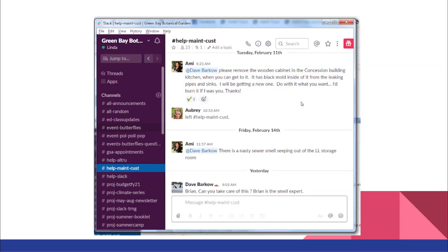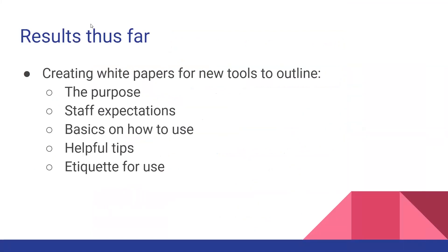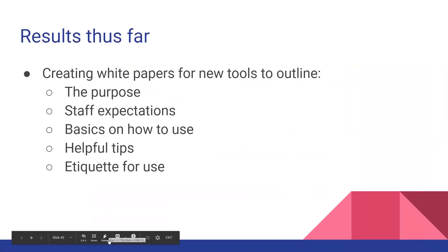A question about what 'white paper' means: basically it's just a how-to sheet or directional document on how to use different tools — a Word document outlining the purpose, staff expectations, and tips to get started. Regarding whether Slack goes to cell phones or computers: it can go to both. Slack is an app you can download onto your cell phone.